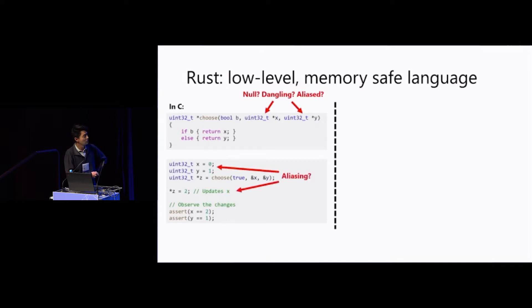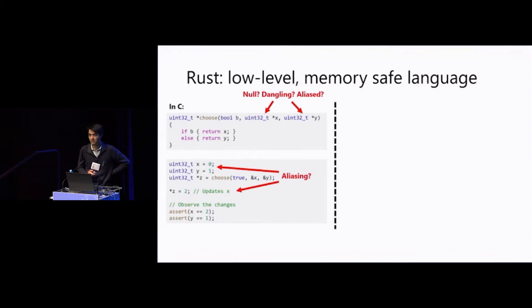This is also true from the caller's point of view: you don't know how z aliases with x and y, and this can lead to a lot of bugs related to memory management.